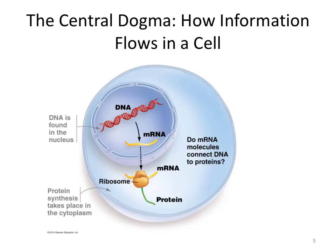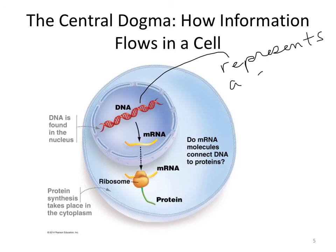What is the central dogma? This is a concept we use in science to talk about how genetic information flows in a cell. Here we see a eukaryotic cell — we know it's eukaryotic because the DNA is in a nucleus. That DNA is in chromosomes, and we're focusing on just one specific short region of DNA, which represents a single gene.